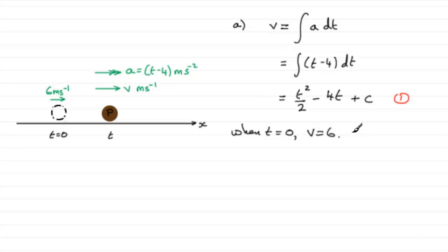We can substitute these two values into equation 1 and get what that constant of integration is. Substituting into equation 1, we've got v which is 6, so 6 equals... if you put t = 0 into this first term and the second term, you're clearly going to get 0, and so that leaves us with c. c equals 6.